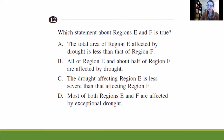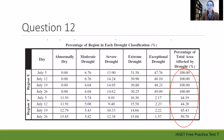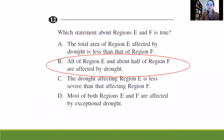Statement D says most of both regions E and F are affected by exceptional drought. Looking at the exceptional drought column, region E has almost half affected by exceptional drought, but region F has a very small percentage there. So D doesn't hold for both regions. With that in mind, B is our best answer.